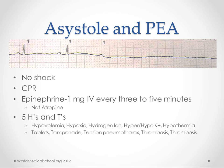There are some various treatable causes we need to keep in mind. The five H's are the possible causes of asystole and PEA: hypovolemia, hypoxia, hydrogen ion (which means acidosis), hyper- or hypokalemia, and hypothermia. Some of these are potentially treatable and should be addressed while we are resuscitating.